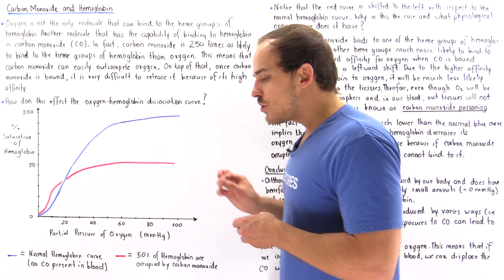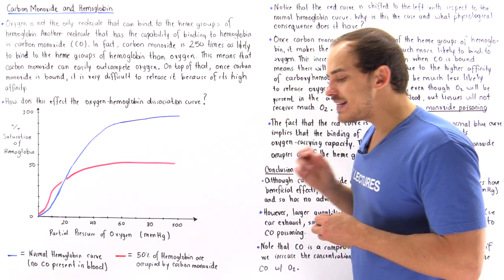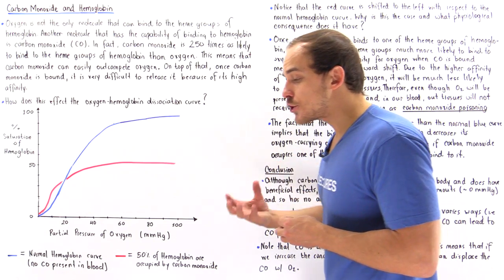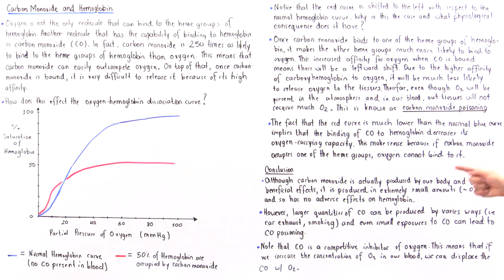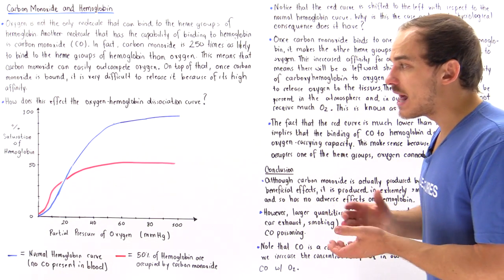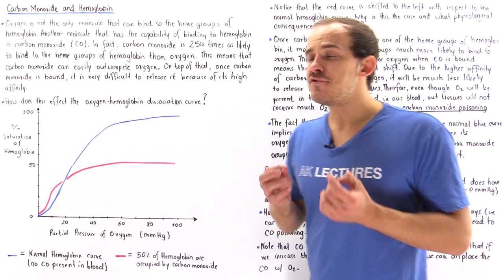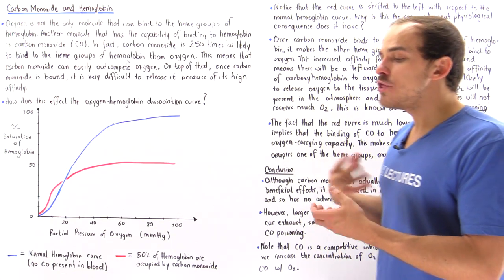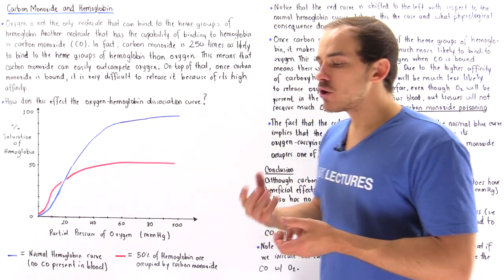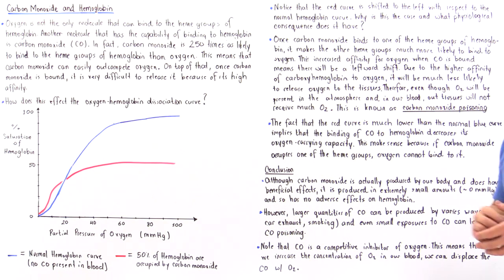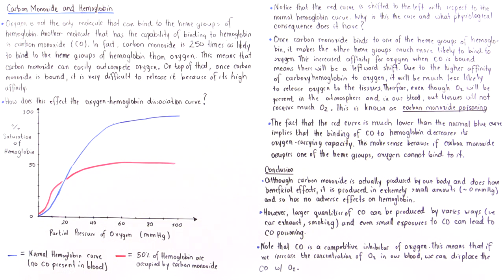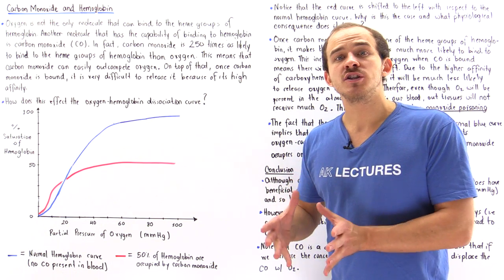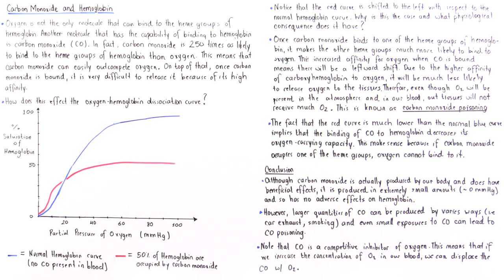Although our body does produce a very tiny amount of carbon monoxide, and carbon monoxide does have certain beneficial effects in our body, our body naturally produces such a small quantity of it that our blood contains about zero millimeters of mercury of carbon monoxide. That means our natural levels of carbon monoxide inside our blood plasma have no adverse effects on hemoglobin. However, other processes that take place outside of our body — for example, the production of car exhaust or the process of smoking — produce much more carbon monoxide, and even a small exposure to carbon monoxide from these processes can ultimately lead to carbon monoxide poisoning.